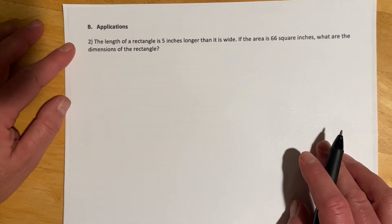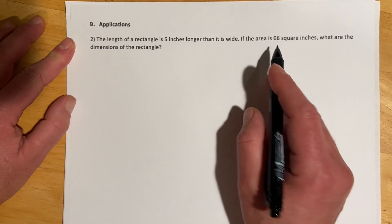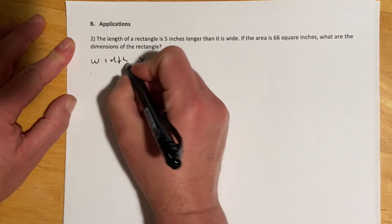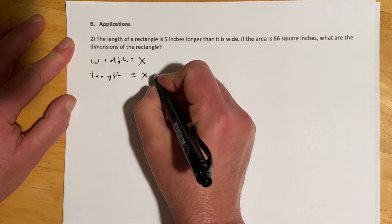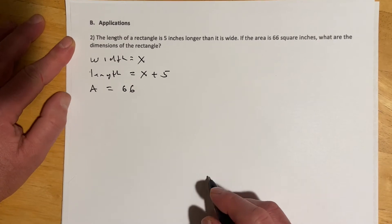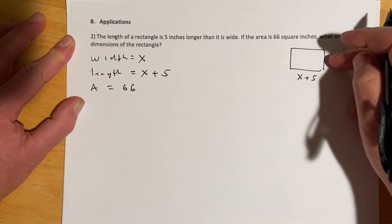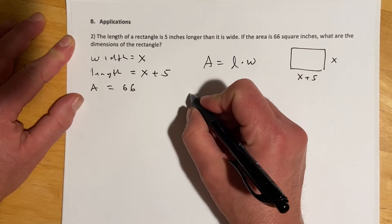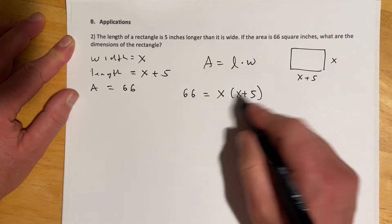The rest of the section is applications with quadratics. This first one: the length of a rectangle is 5 inches longer than its width; if the area is 66 square inches, what are the dimensions? Let the width be x, then the length is x plus 5. For a rectangle, area equals length times width, so 66 equals x times (x plus 5).